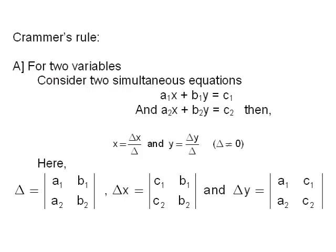Cramer's Rule. We can solve simultaneous equations using determinants. We can find a formula for the values of the variables in terms of determinants. This formula was given by mathematician Cramer, and hence it is called Cramer's rule.